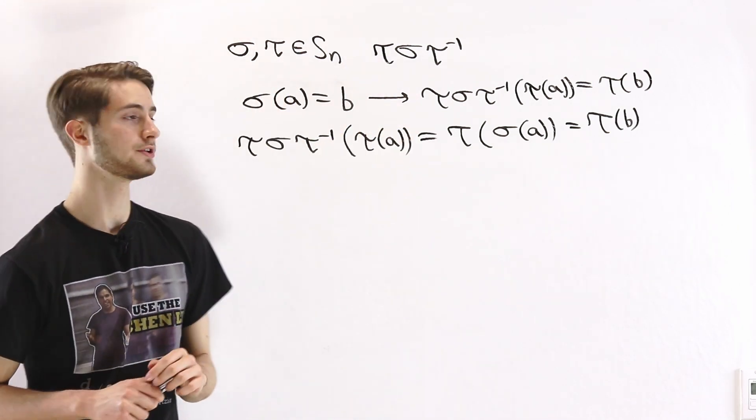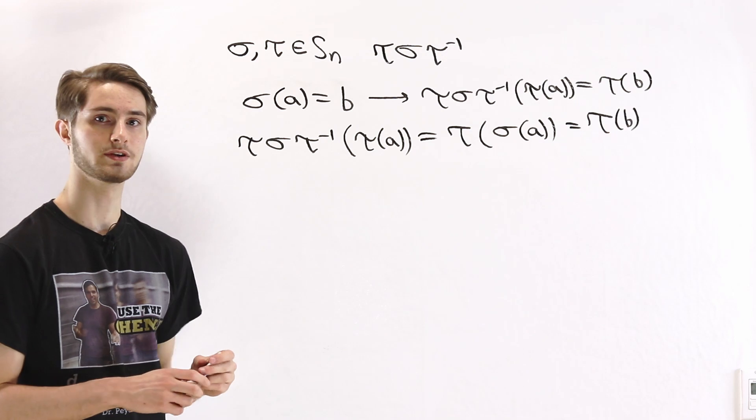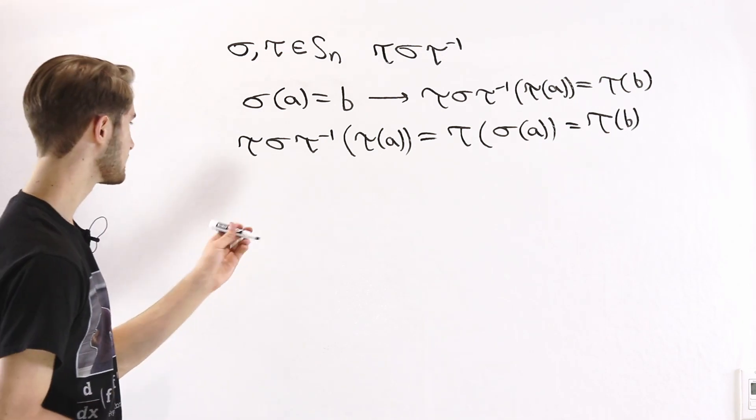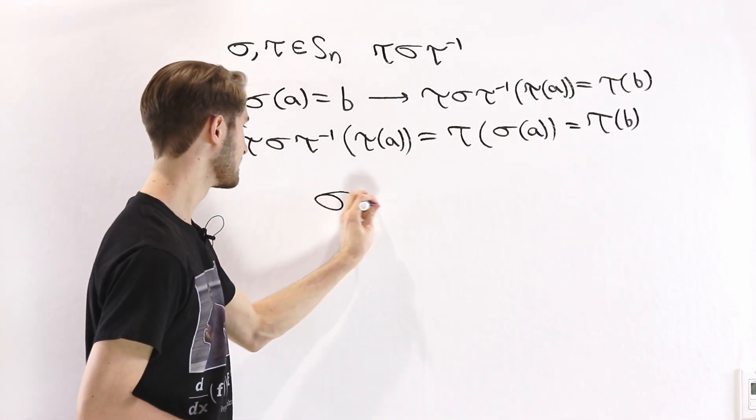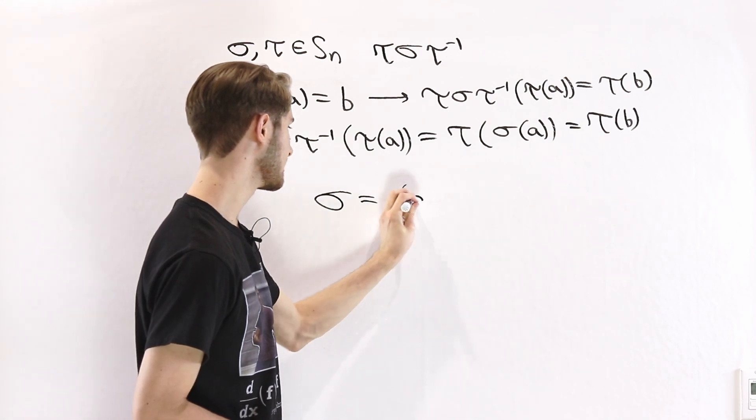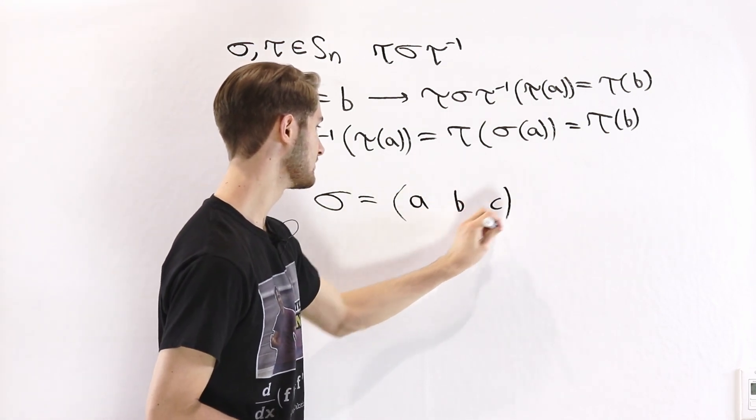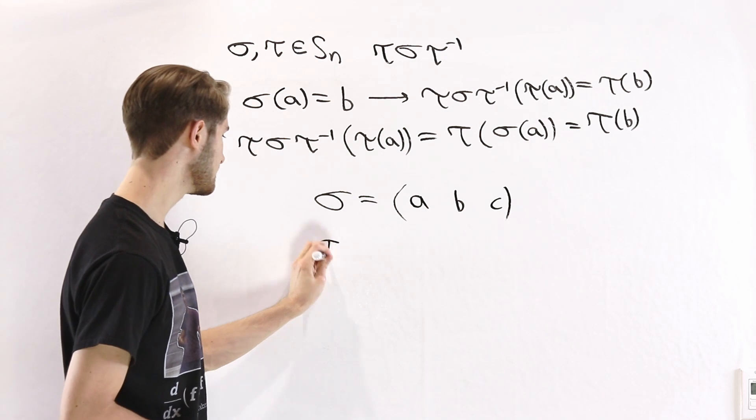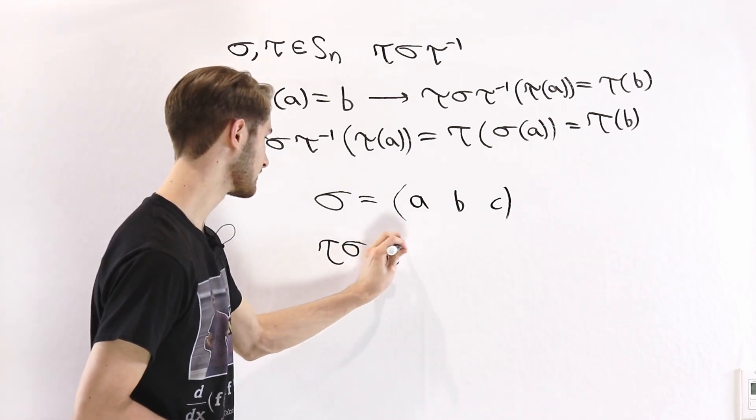let's take a look at the disjoint cycle notation for tau sigma tau inverse. For example, let's suppose that sigma is the cycle that looks like A, B, C for some letters here.